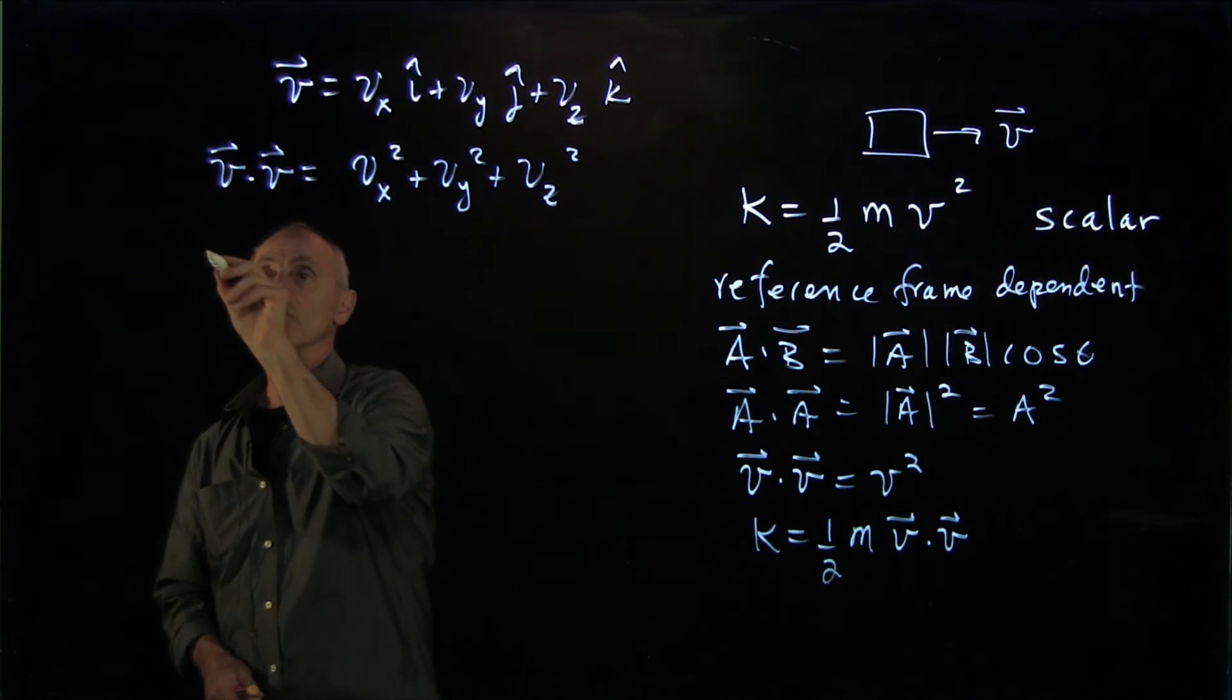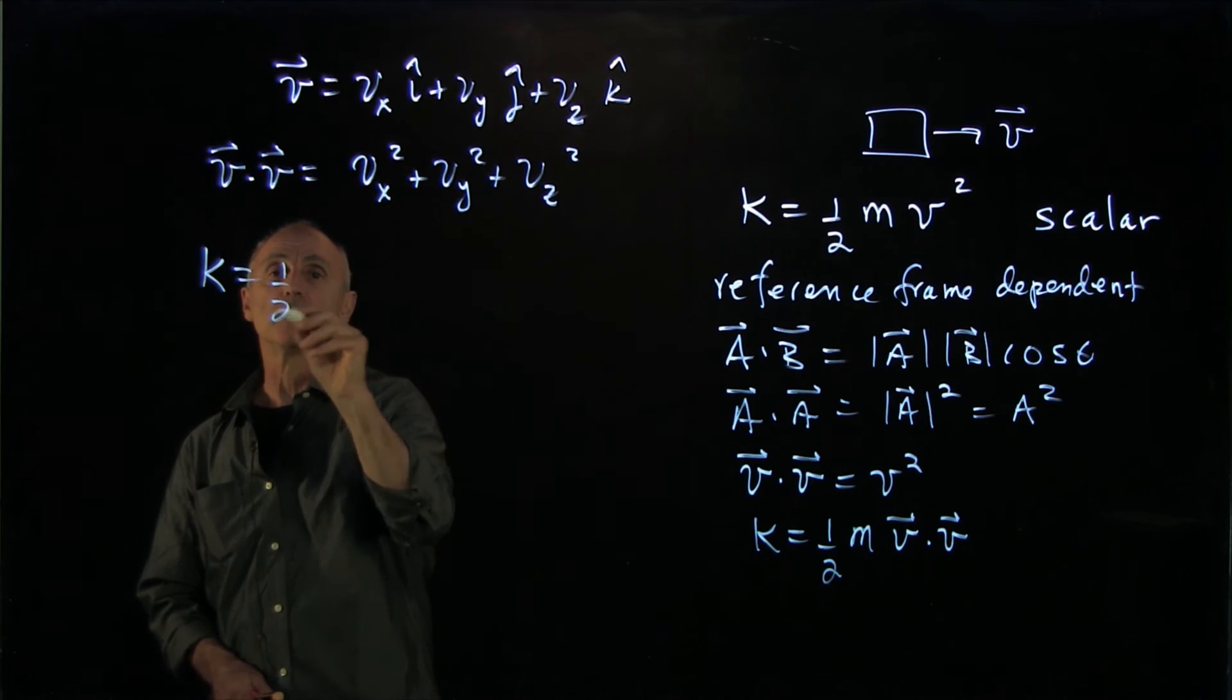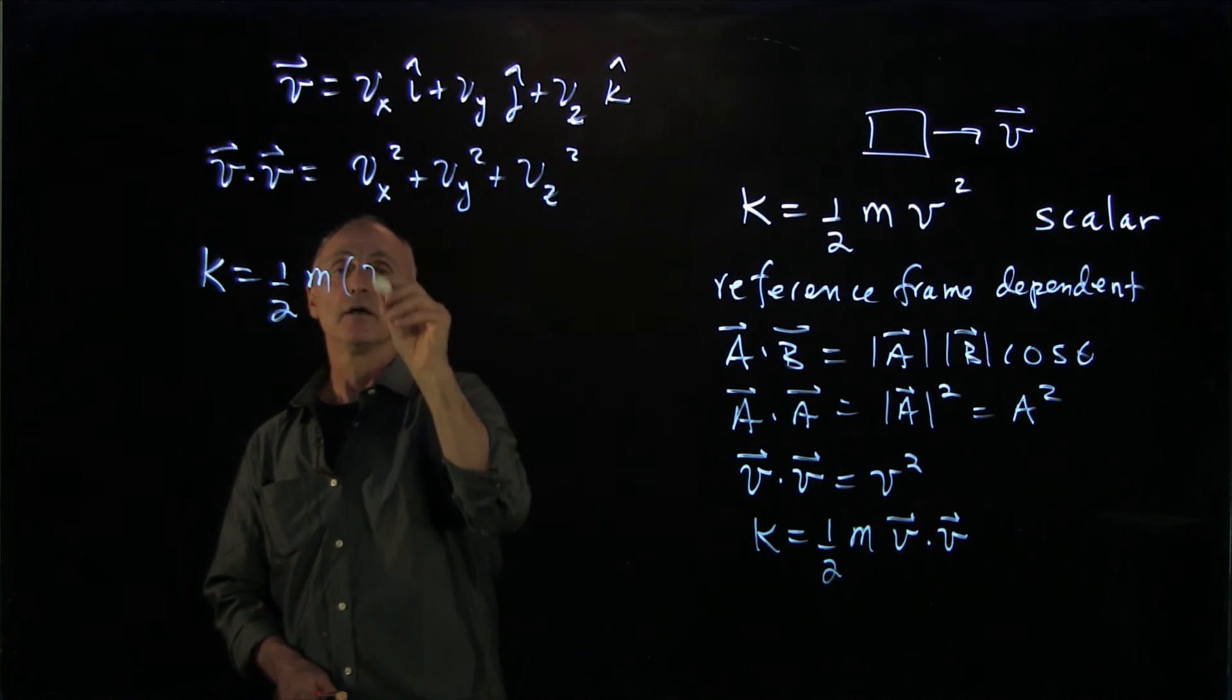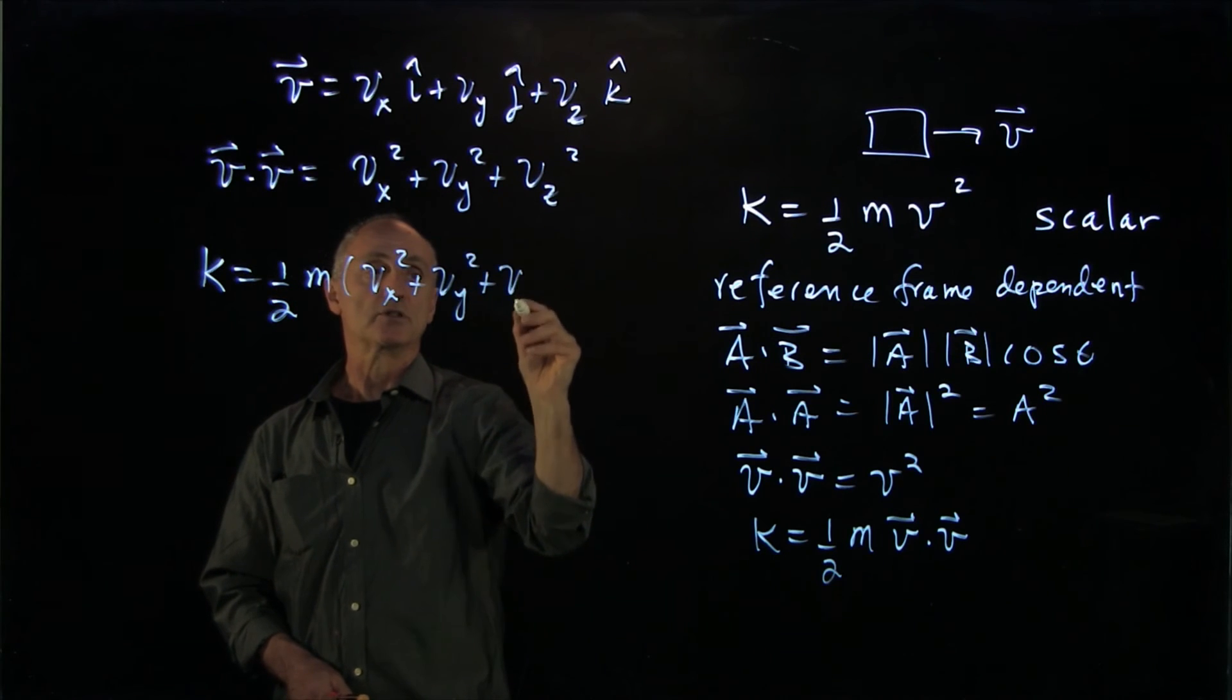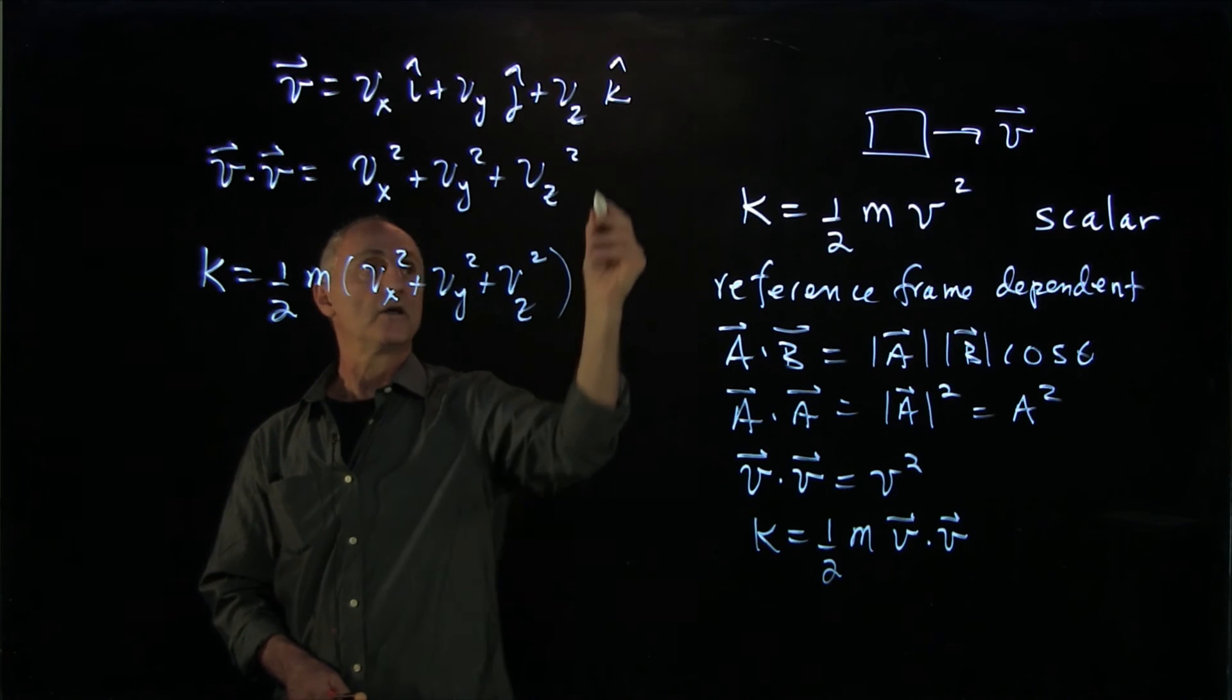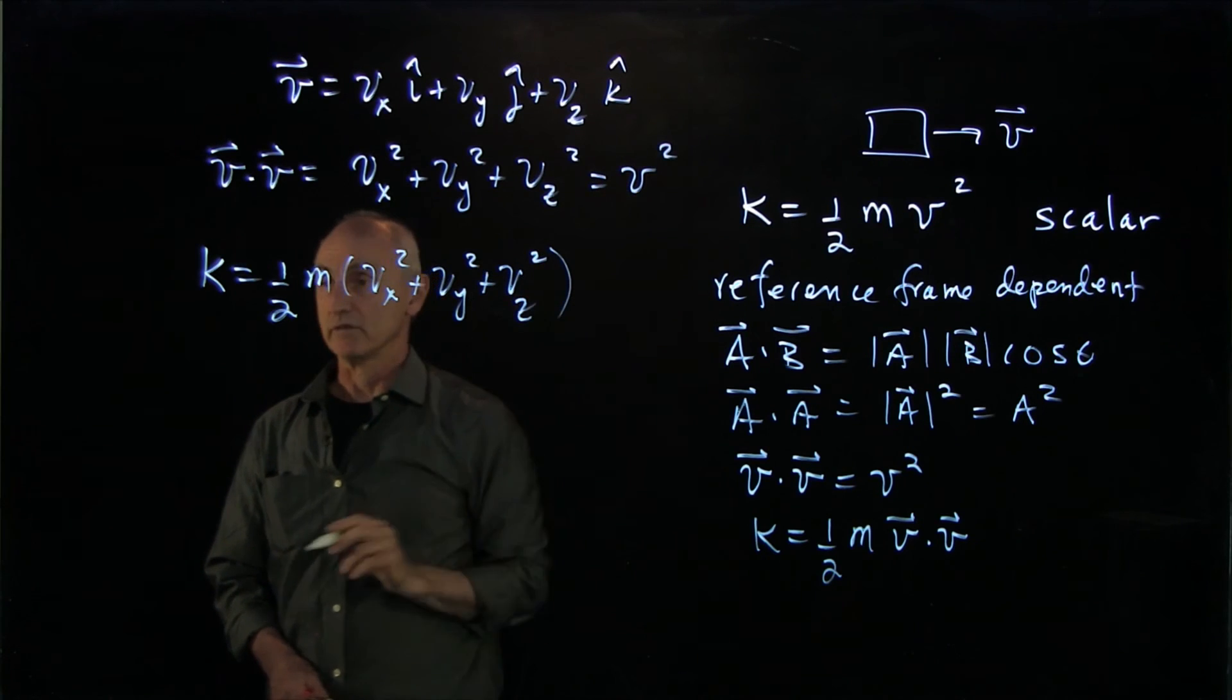And so in a Cartesian system, we can now say that the kinetic energy is 1/2 m (vx squared plus vy squared plus vz squared), because that's the velocity squared.